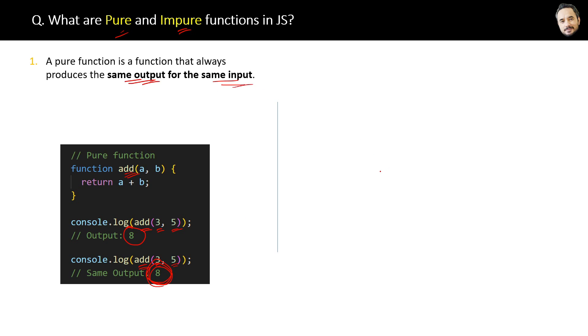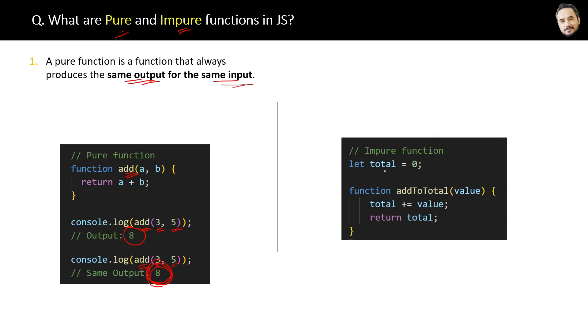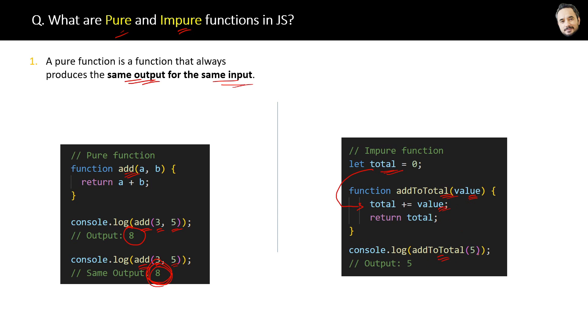Now let's see the impure functions. Here you can see we have a total variable outside the function, and this addToTotal function is adding some value from the parameter with this total variable. Now when we call this function like this, the output will be total plus 5, and total is 0.